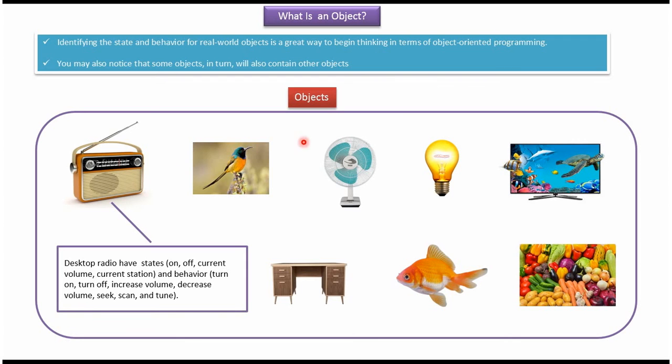Like desktop radio, bird, fan, bulb, TV, vegetables, fish, and desk. Desktop radio has states like on, off, current volume, and current station, and behaviors like turn on, turn off, increase volume, decrease volume, seek, scan, and tune.